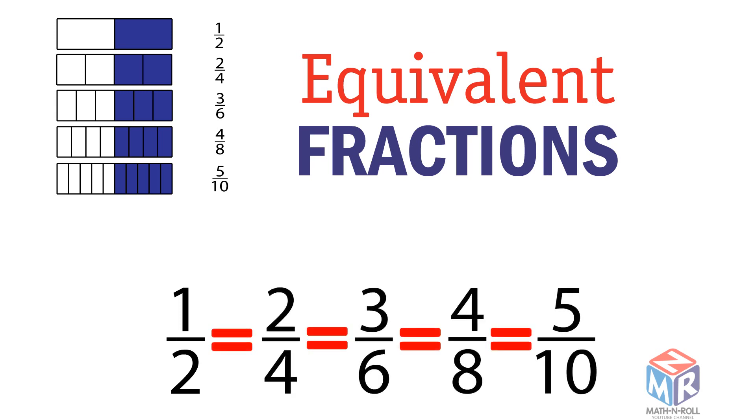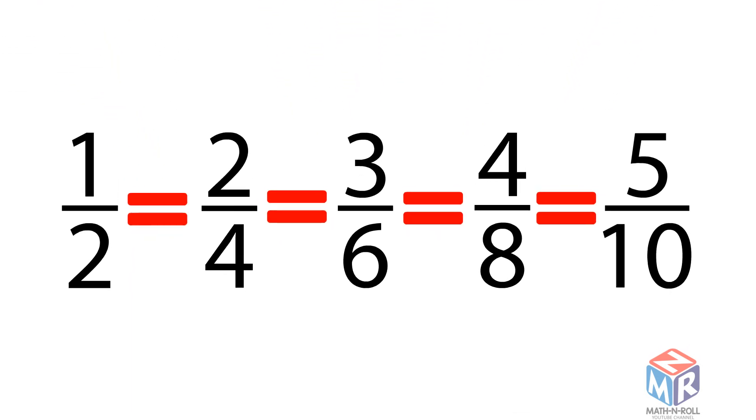Let's see how we make equivalent fractions. 2 over 4 is 2 times greater than 1 half. We multiply the first numerator by 2 and the denominator by 2 to get 2 over 4. To get 3 sixths, we multiply the numerator by 3 and the denominator by 3. To get 4 eighths, we multiply both the numerator and the denominator by 4, and to get 5 tenths, we multiply the numerator and the denominator by 5.